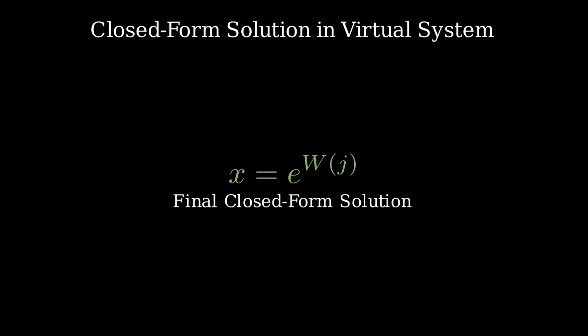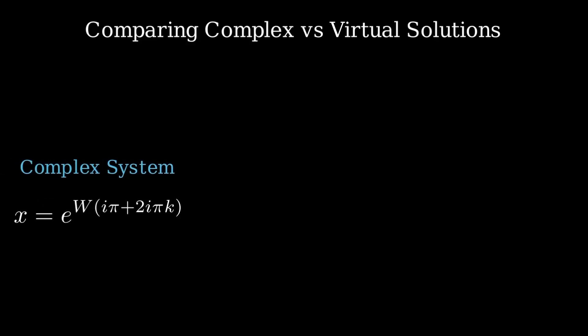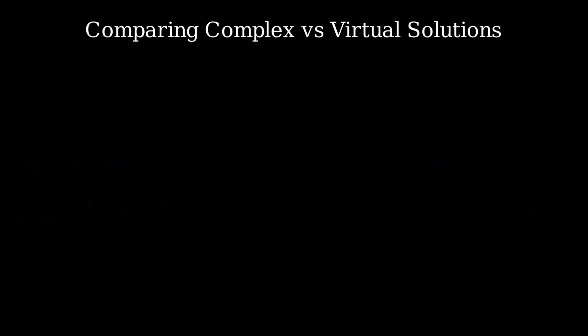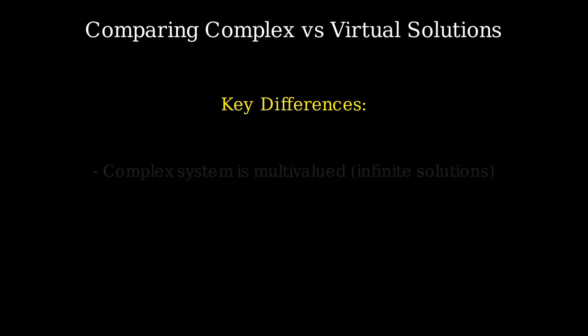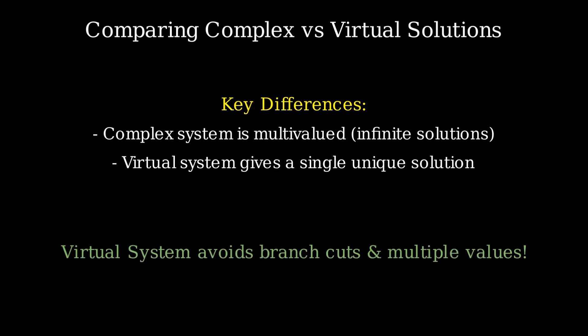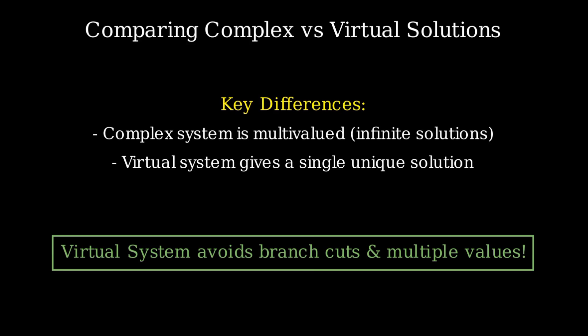Unlike the complex system, this method gives us just one unique answer. In the complex system, the solution is x equals e raised to the power of W of i times pi plus 2 times i times pi times k, which gives us infinitely many solutions — because the complex logarithm has multiple branches. But in the virtual number system, the solution is simply x equals e raised to the power of W of j: just one single well-defined answer. The complex system also relies on imaginary numbers, introducing additional complexity. But the virtual system eliminates the need for imaginary units and multiple branches, offering a more natural and elegant approach.